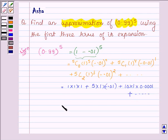This is further equal to 1 minus 0.05 plus 0.001 plus so on. Now since we have to find the approximation using the first three terms, these are the first three terms.